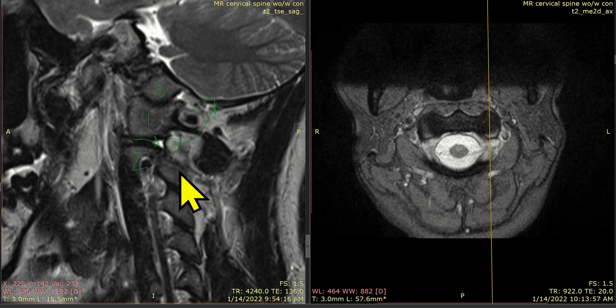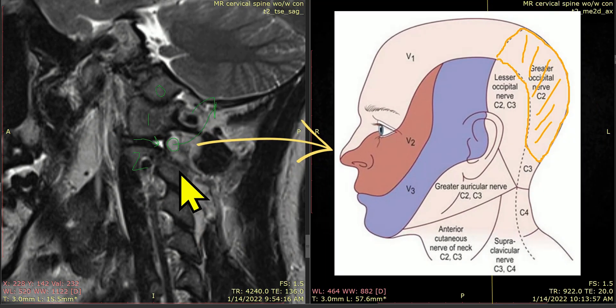The joint capsule is sort of around and getting pushed around this C2 dorsal root ganglion. The C2 dorsal root ganglion goes, as shown on the screen, to the back of the head on the left. So that would irritate the C2 dorsal root ganglion, and that would ultimately cause the back of the head to feel bruised — because that's where that C2 nerve goes to, or that's the part of the skin that it supplies.